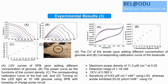We obtained a maximum power density of 11.3 microwatts per cm² at 0.5 V, a detection range of 1 to 18 mM, an open circuit voltage of 0.365 V, and a sensitivity of 0.63 microwatts per cm² per mM. The anode exhibited 25.02 microamperes per cm² sensitivity.